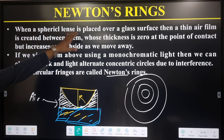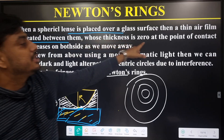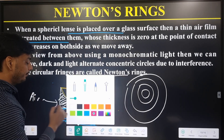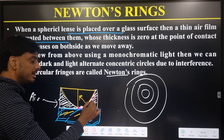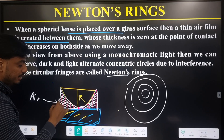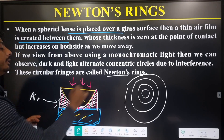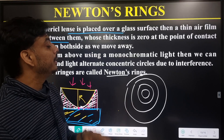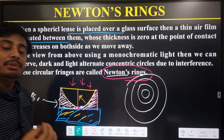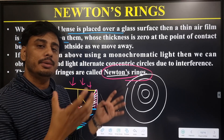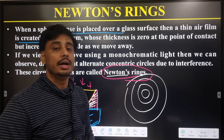When a spherical lens is placed over a glass surface, an air film is created between them whose thickness is zero at the point of contact. As we move outward, the thickness of the air film gradually increases on both sides. When we view from above using monochromatic light, we observe interference patterns in the form of concentric circular rings, and these rings are known as Newton's rings. We have to find the conditions for constructive and destructive interference, as well as different parameters like the radius of the ring and the wavelength of light.